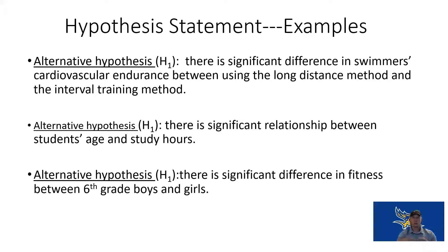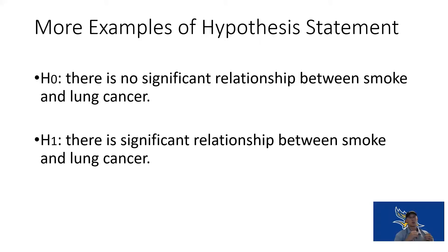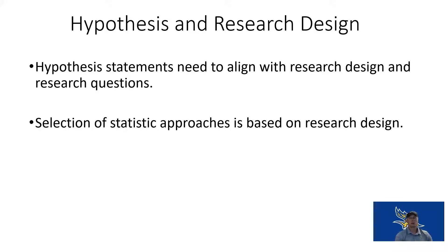We are making an educated guess — a hypothesis — that there is something going on here. This is the purpose of our research: is our hypothesis correct? For example, the null hypothesis is there's no significant relationship between smoking and lung cancer; the alternative hypothesis is there is a significant relationship between smoking and lung cancer. Hypothesis statements need to align with our research designs, using correct wording and formatting, and then we select the statistical approach that fits that research design.